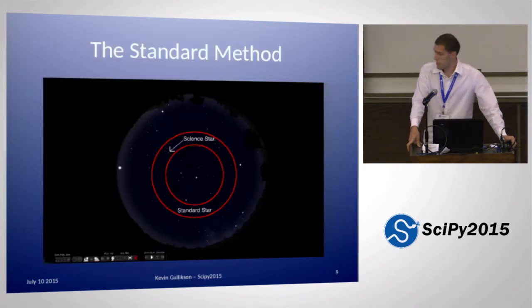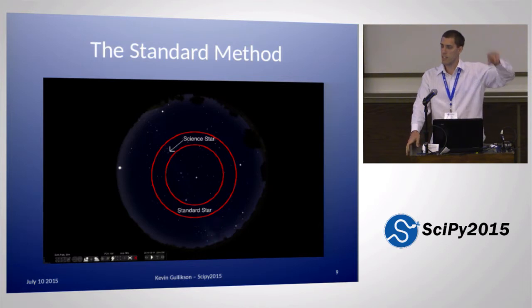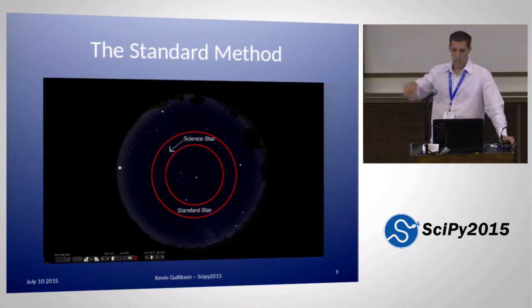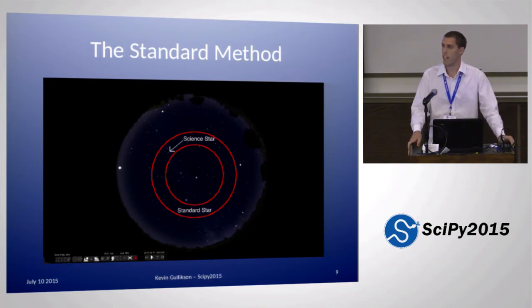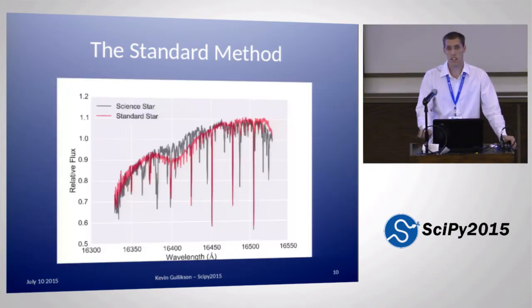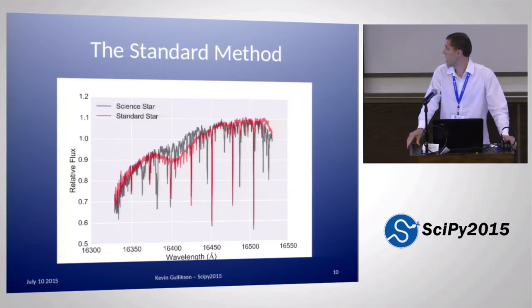There's a method to do this already. Basically you take your science star and then you look at the same air mass, which is the same kind of altitude angle, somewhere else on the sky for a hot, rapidly rotating star usually. You have to find one of these stars in a relatively tight annulus and observe it right before or right after your science target.